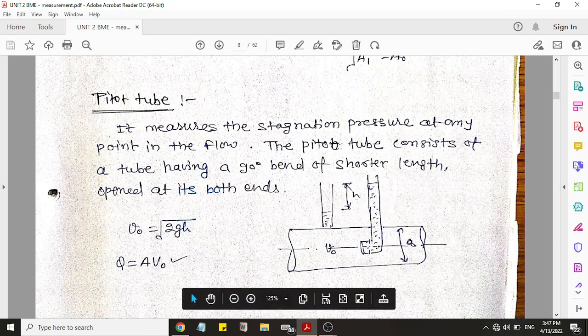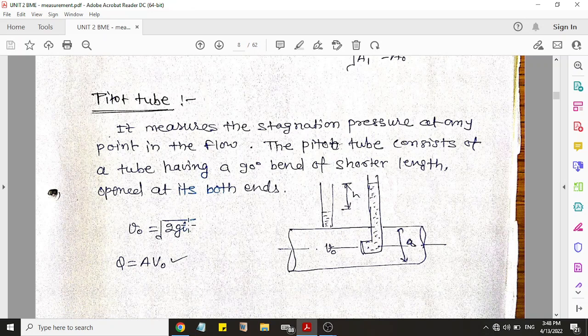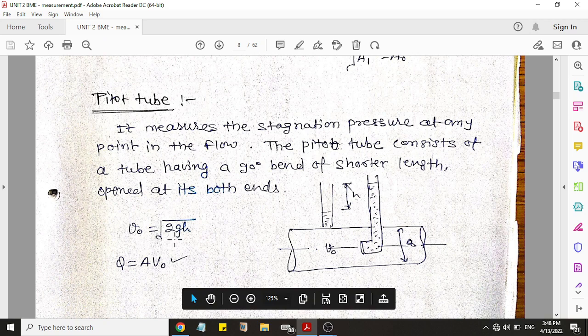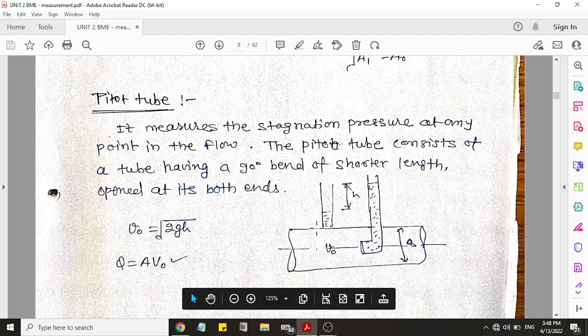So you have to simply put this glass tube inside the flowing water and measure the value of H, and put this value of H in this simple formula: V = √(2gH). So you will get the velocity of flowing.